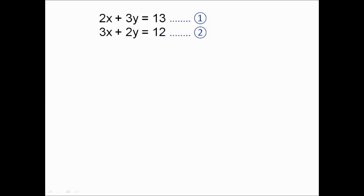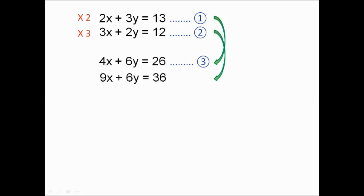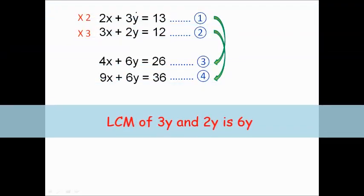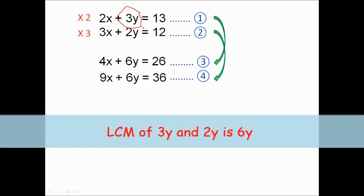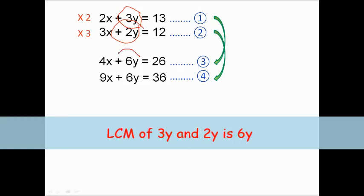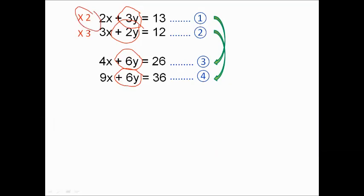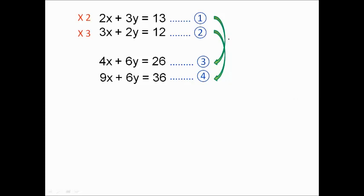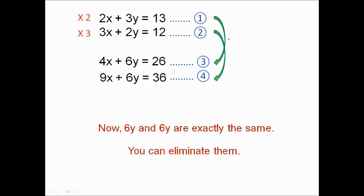For the third example, I'm going to modify equation 1 by multiplying it by 2, giving 4X plus 6Y equals 26, and equation 2 by multiplying it by 3, giving 9X plus 6Y equals 36. I want to cancel Y, so I need the 3Y and 2Y to become their lowest common multiple, which is 6Y. To achieve this, I multiply one equation by 2 and the other by 3, so that after this we can easily cancel the 6Y and 6Y terms.